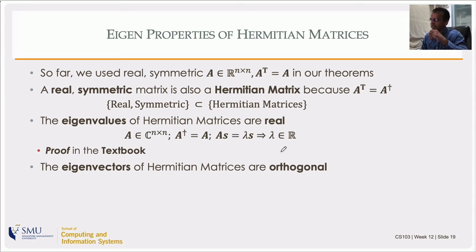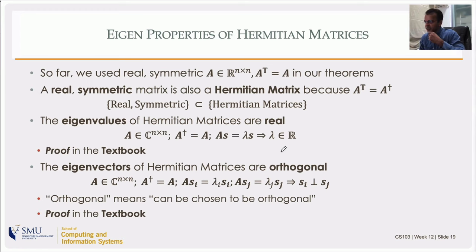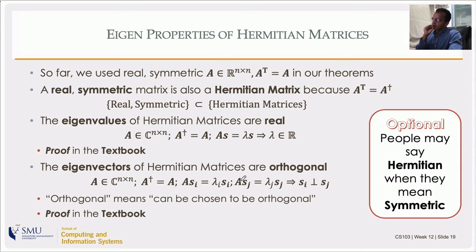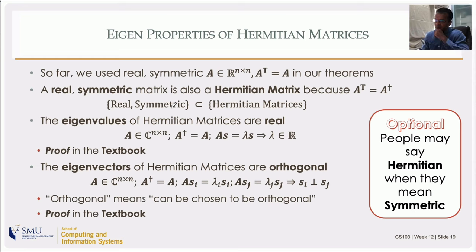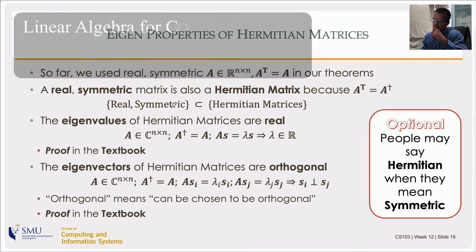Complex fields may become important in computer science as quantum computing develops, and data science algorithms over complex fields are emerging. Eigenvectors of Hermitian matrices are orthogonal, just as for real symmetric matrices, and can be chosen to be orthonormal. Also note that some people use the word 'Hermitian' even for real symmetric matrices just because they prefer the name, so if you see it on Math Stack Exchange it may simply mean symmetric. The complex analogue of an orthonormal matrix is called a unitary matrix.